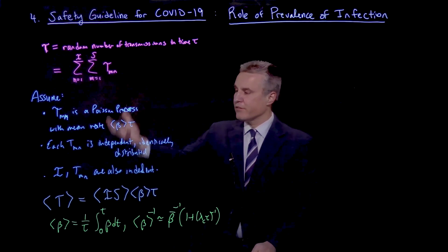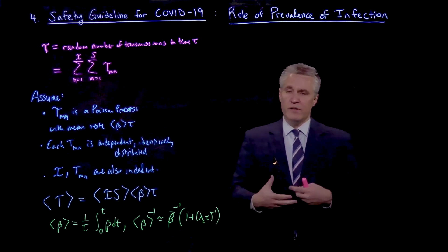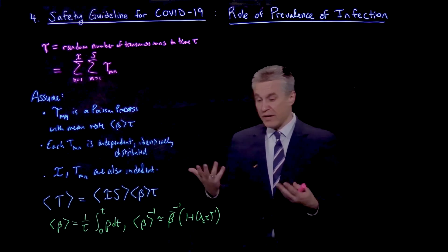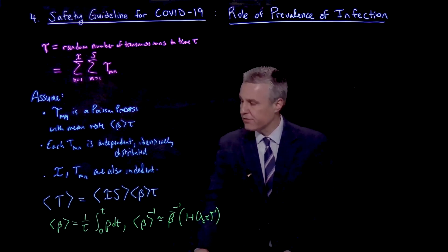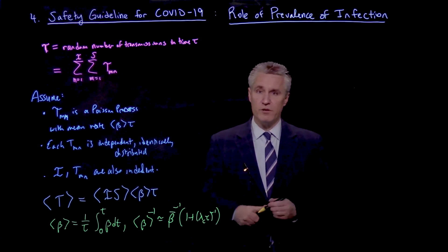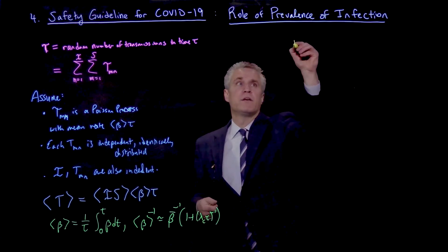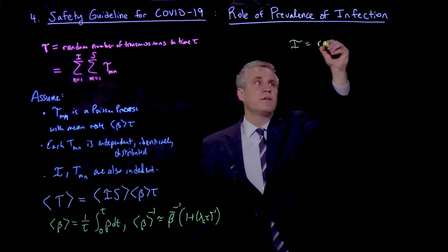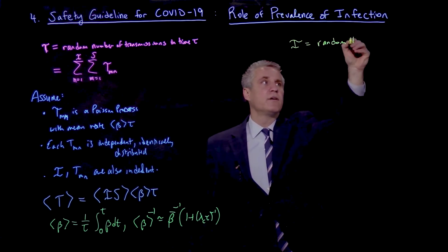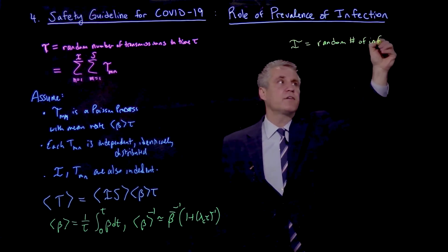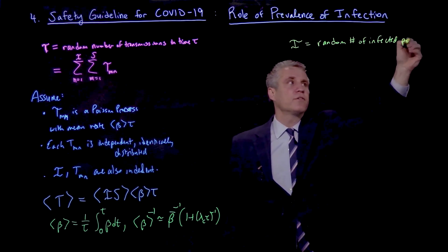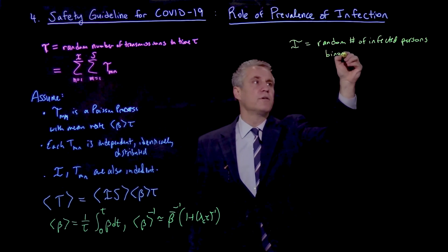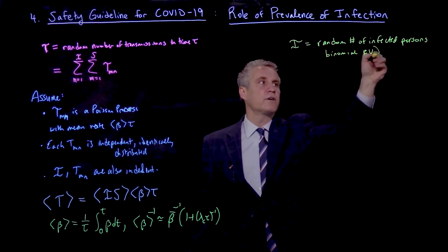So this is a very simple model of the random transmission that can occur when you take into account the randomness in the number of infected people. So now let's start to write down a model for the number of infected people. The simplest thing there is that the random number of infected persons should be a binomial random variable.